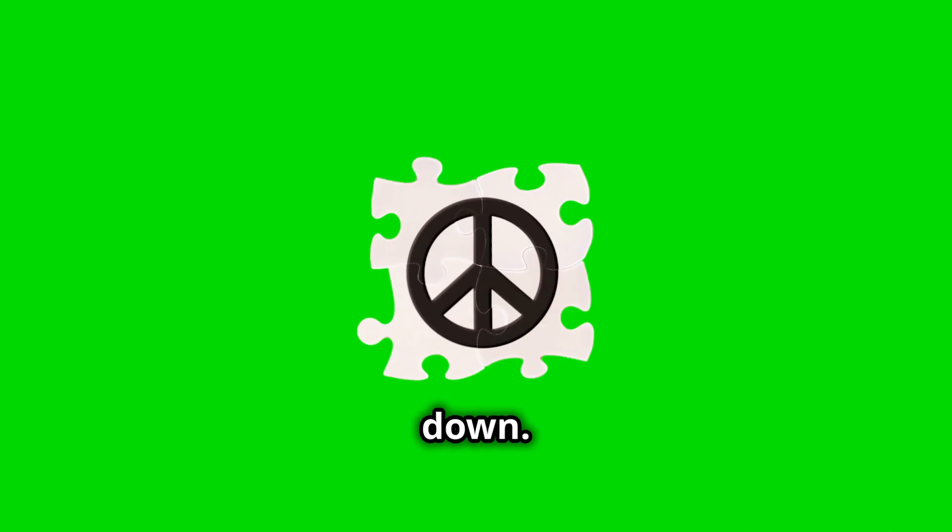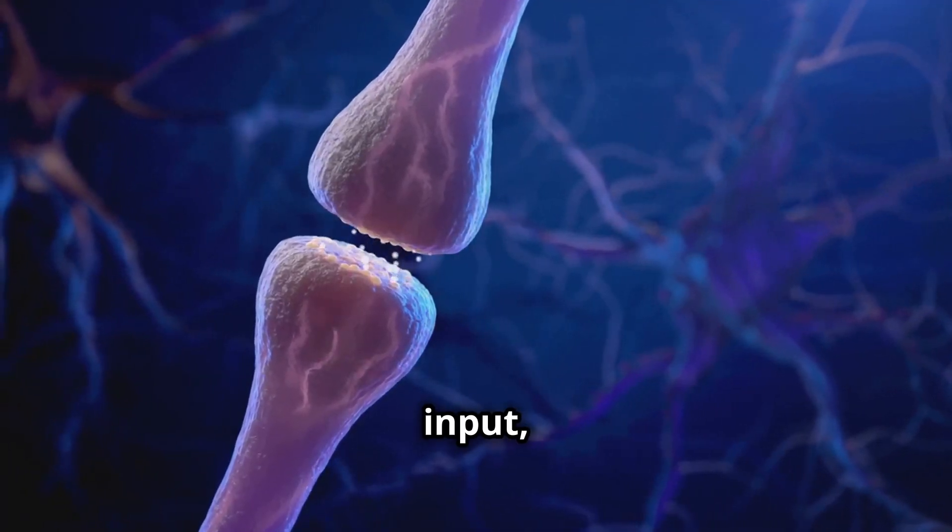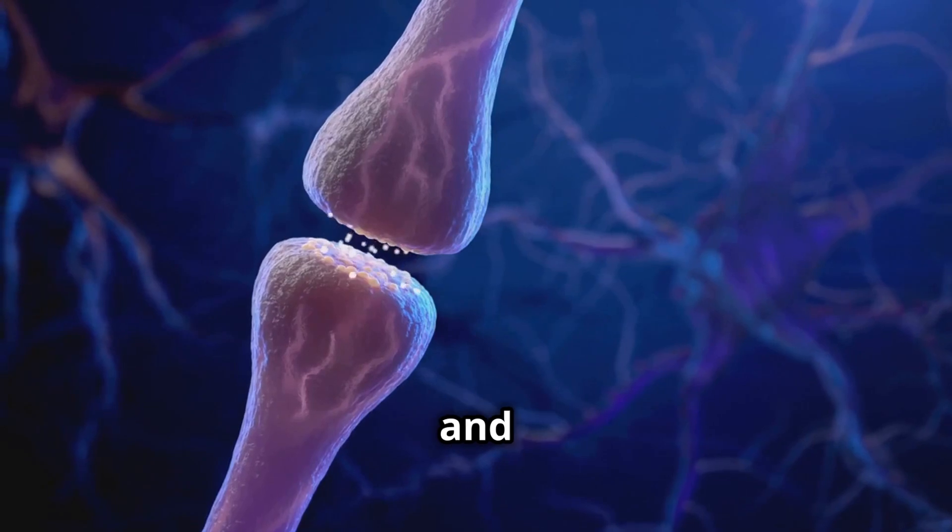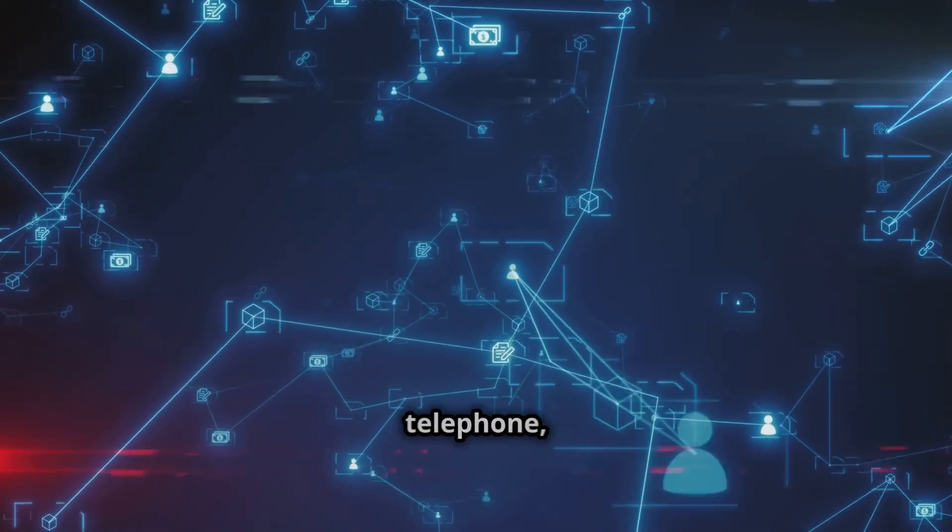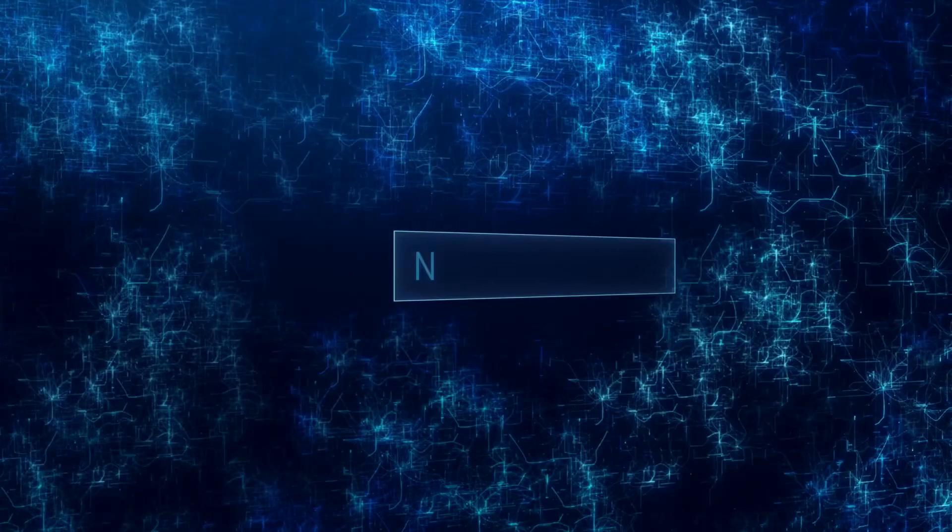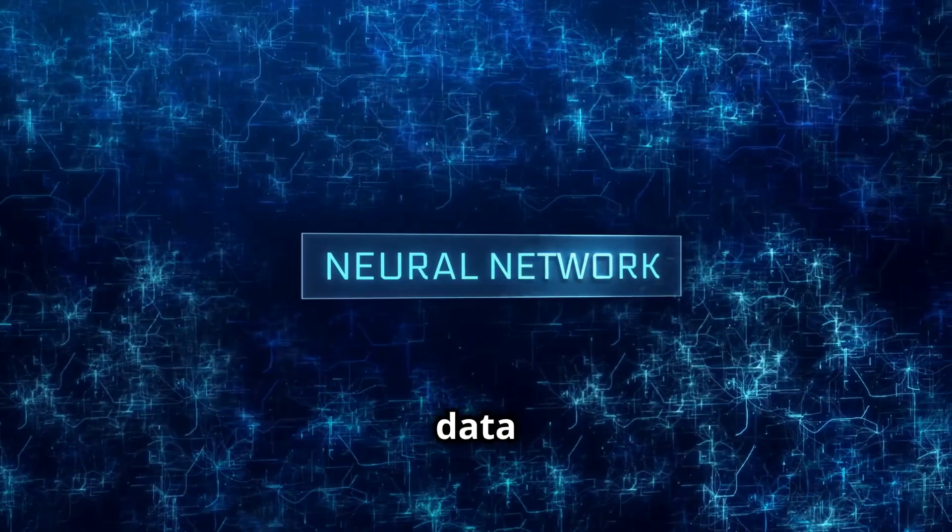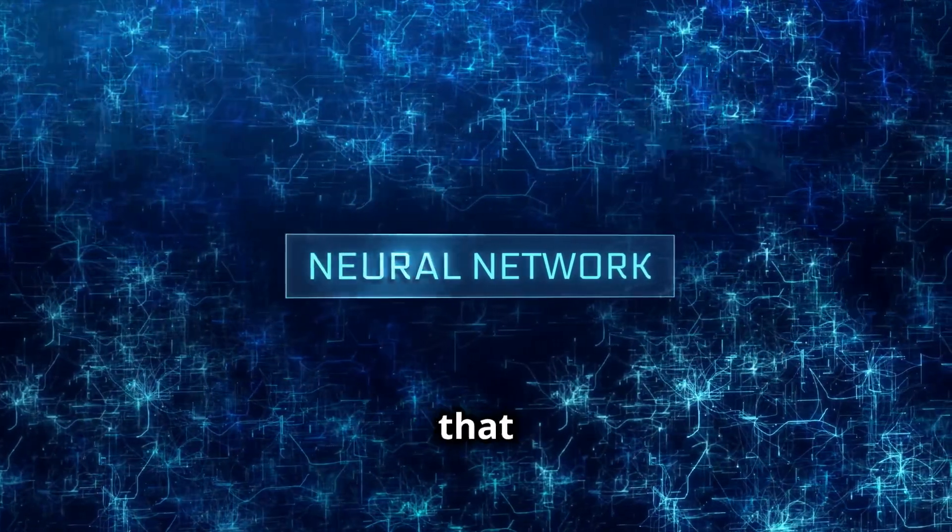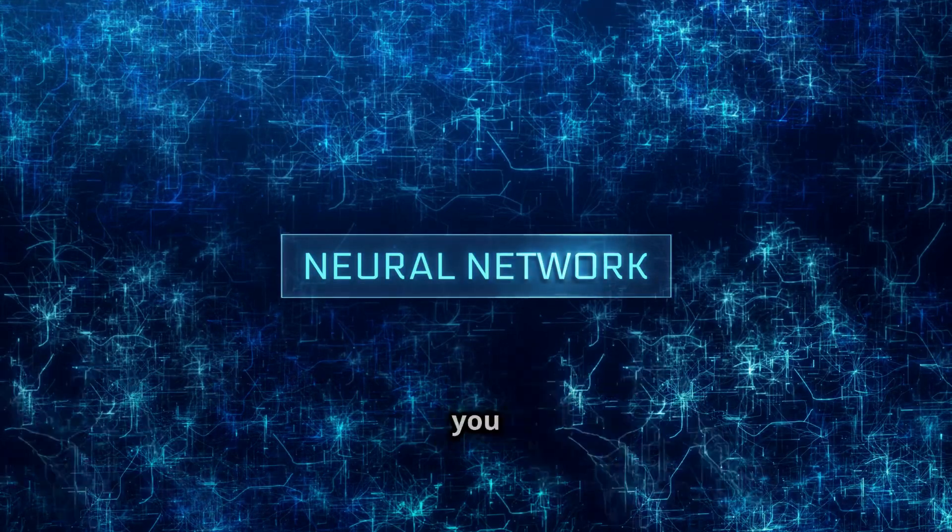Let's break it down. Each neuron in an ANN receives an input, processes it, and sends an output to the next neuron. Think of it like a game of telephone, but with data instead of whispers. You have input neurons that take data in, hidden layers that transform the data, and output neurons that give you the final answer.